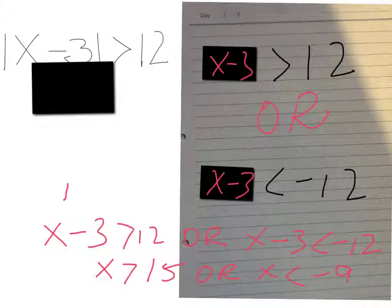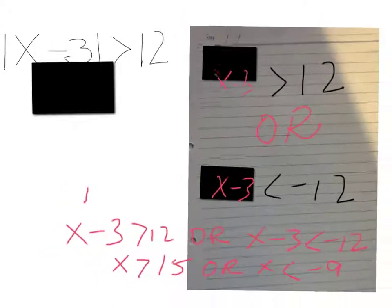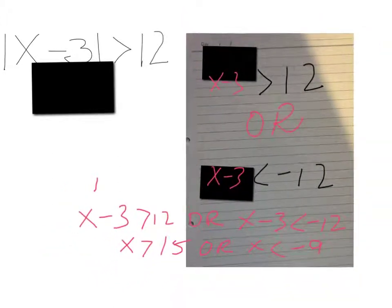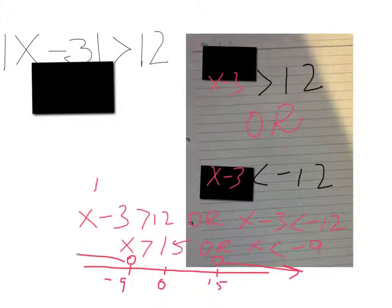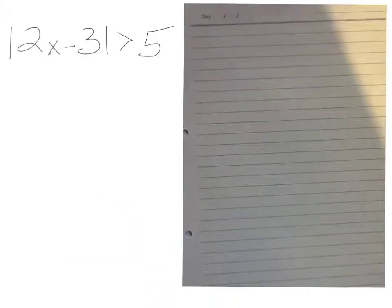Of course, you would also have to draw a graph for that. So the graph would look something like this: here you have 15 and here you have negative 9. Zero is somewhere in between. This would be all the numbers greater than 15 and all the numbers less than negative 9.